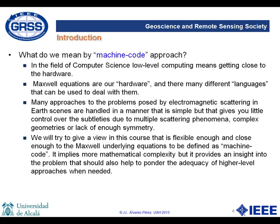The first thing to do is to clarify what we mean by machine code approach. In computer science, machine code means to speak directly the language of the computing machine. In our case, the machine is reality, governed by Maxwell's equations. These equations describe the electrodynamics of the physical phenomena observed in Earth Observation Remote Sensing.